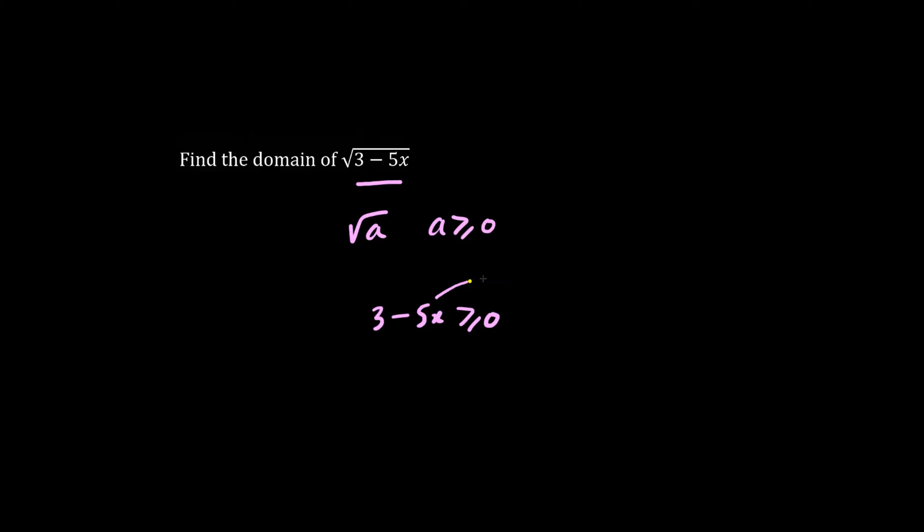We throw the negative 5x over. And so we get a positive 5x is less than or equal to 3. We divide both sides by 5. And we get x is less than or equals to 3 fifth. This is equivalent to saying that x is less than or equals to 3 over 5.